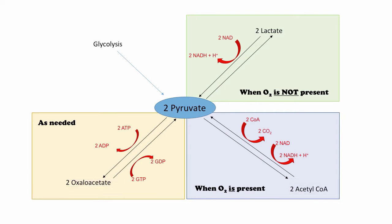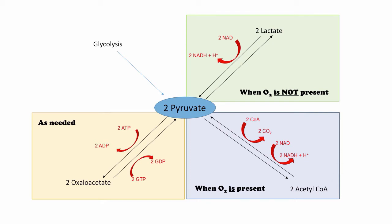If there is no oxygen present, the two pyruvate molecules will become lactic acid molecules. When oxygen is present, they will be turned into acetyl-CoA with a byproduct of carbon dioxide. Finally, if there is a need for more oxaloacetate, then pyruvate will be changed into that.